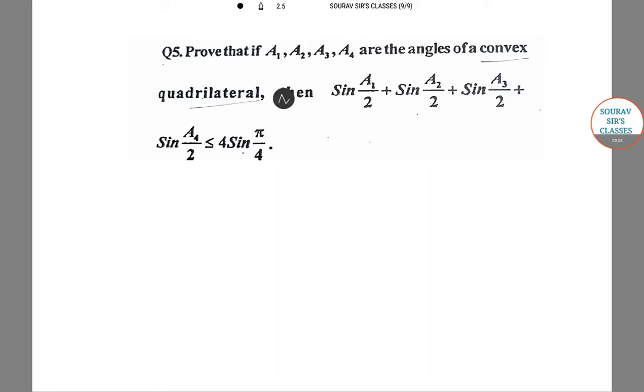Now, what is a convex quadrilateral? In general, a convex polygon is a polygon in which all angles are less than 180 degrees.